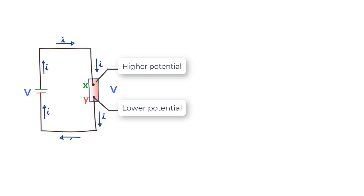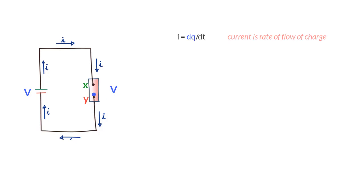If we say that charge DQ moves between terminals X and Y in time DT, then since current is the rate at which charge moves, current I should equal DQ upon DT, or DQ should equal I times DT.